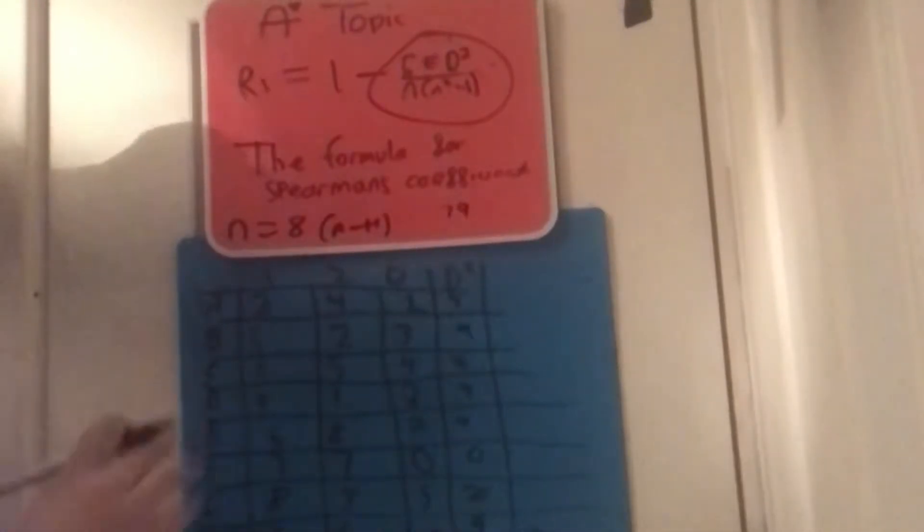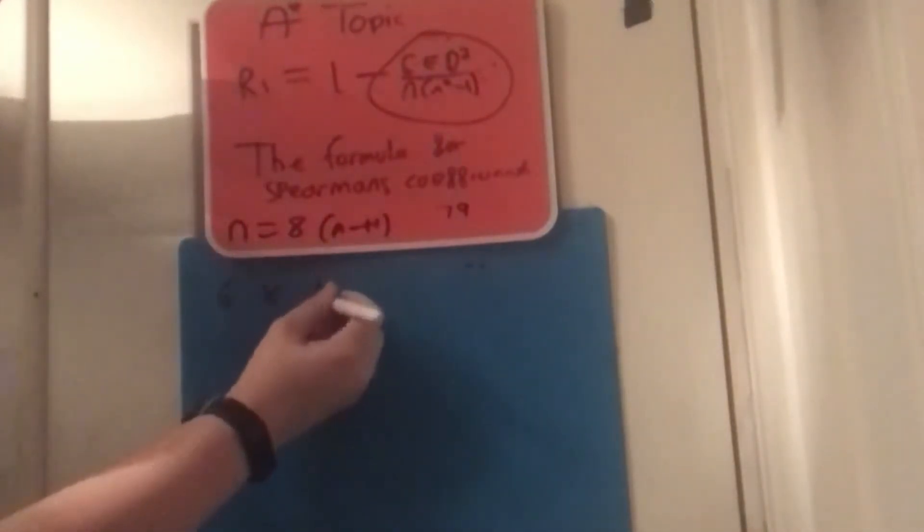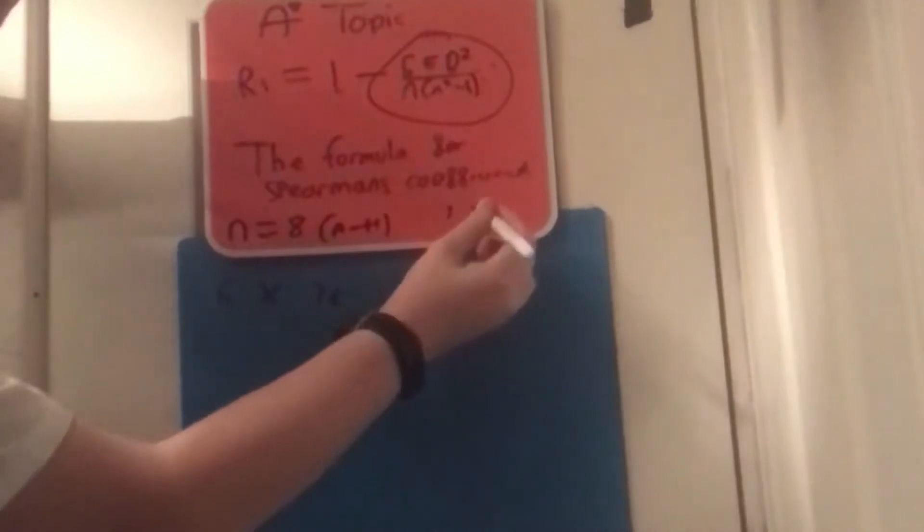So we can now start to work out our formula. But it also means I'm going to have to rub out this, the whole table, right? There we go. Right. So now we're going to be doing 6 and then times 76. I don't know why I wrote 79. It's 76.